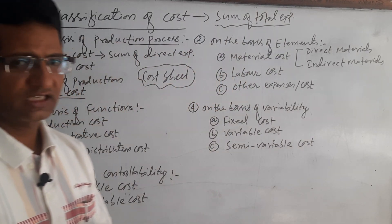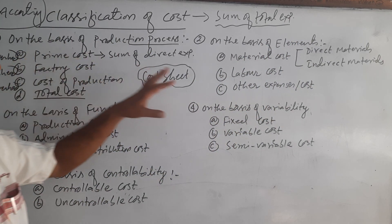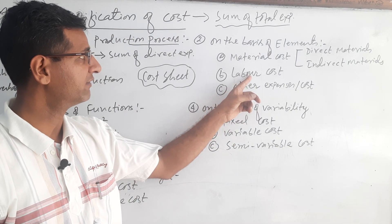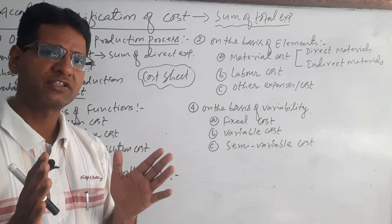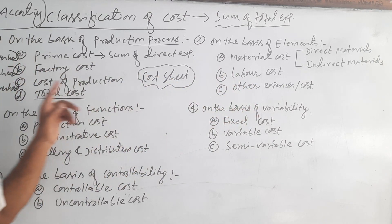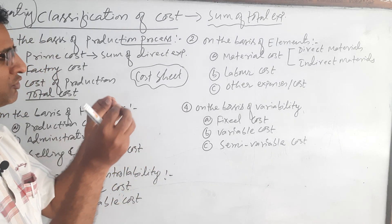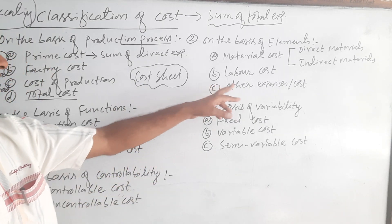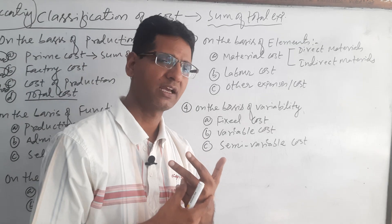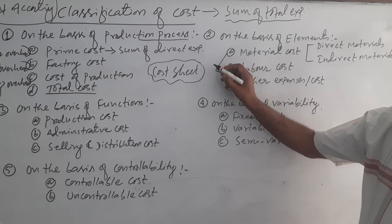Direct materials are used in prime cost, as already mentioned. Indirect materials are used in factory overhead. All materials are important for calculating the cost of any goods. Labour, the second element, is also known as wage cost, and there are two types — direct and indirect. Direct labour is used in prime cost and indirect labour is used in factory overhead. For other expenses, direct expenses are related to prime cost, and indirect other expenses are related to different overheads — factory overhead, office overhead, and selling and distribution overhead. Ultimately, the sum of these three overheads is total cost.